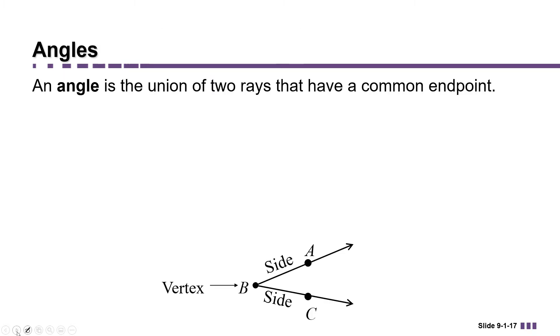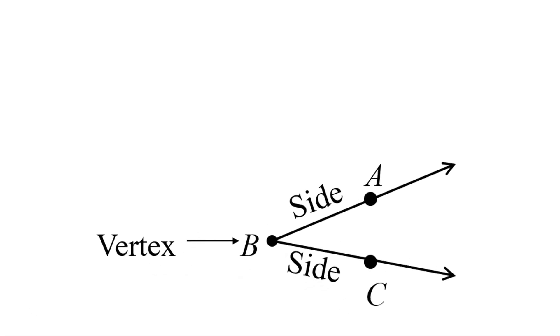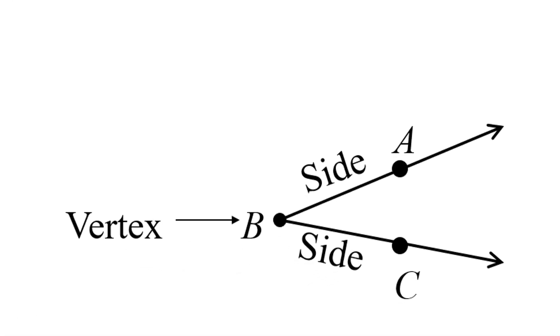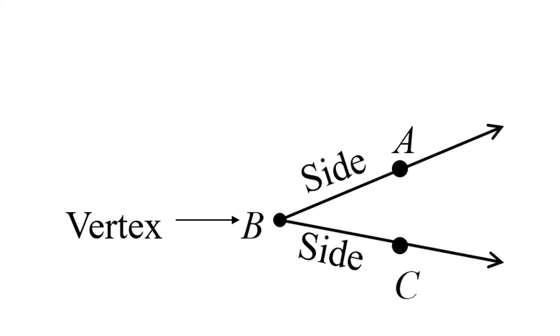An angle is the union of two rays that have a common endpoint. Here we have a diagram of an angle and the endpoints of the two rays that are joined here is the point B.